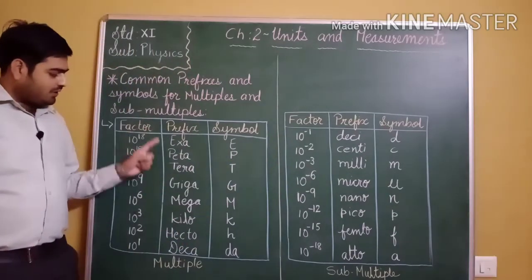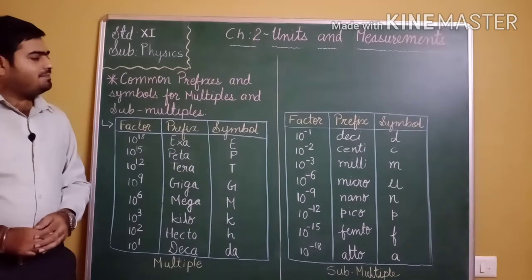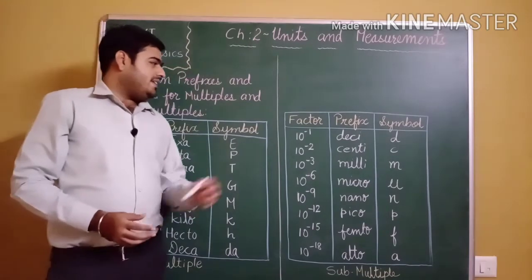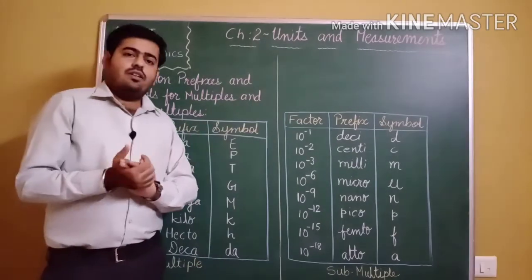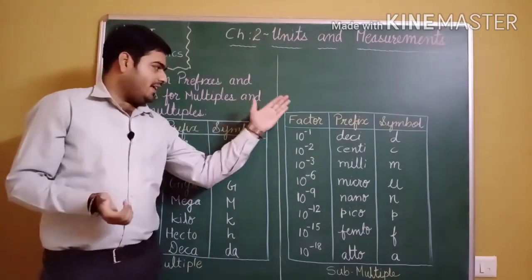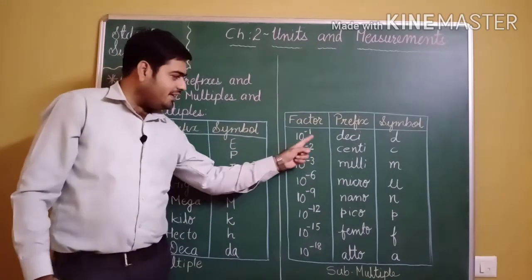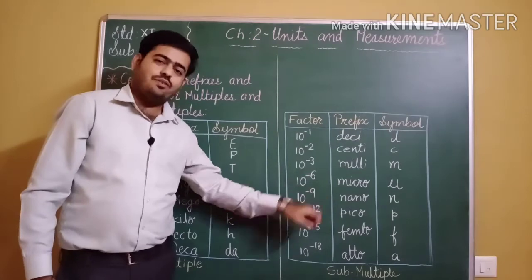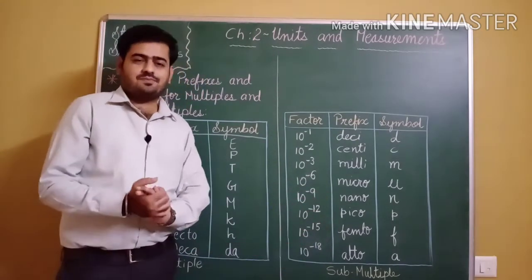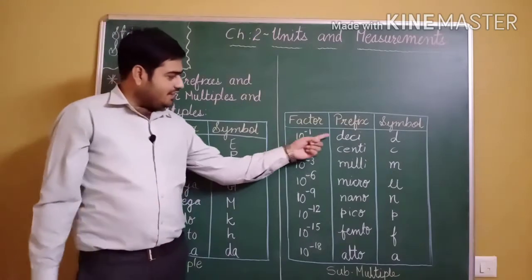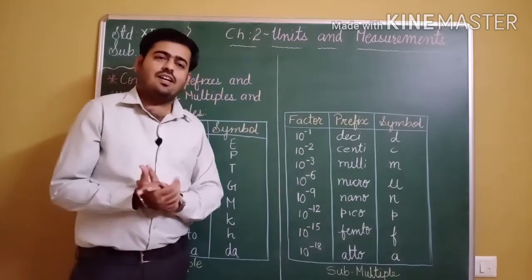To remember the submultiples table, use this mnemonic: 'Deci ko centi mili, micro ko nano, pico ko femto, atto akela.' So deci is 10 to the power minus 1, centi is 10 to the power minus 2, milli is 10 to the power minus 3. Then micro ko nano: pico ko femto, atto akela — atto means 10 to the power minus 18.